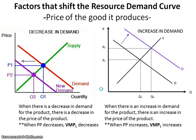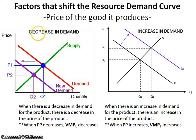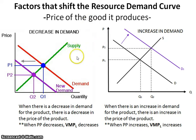When we talk about the demand for labor curve, we're talking about different factors that will shift this downward sloping demand curve. The number one reference given is the price of the good it produces, because the demand for a resource is derived from the demand for the product that it produces. It really should make sense intuitively how this falls into play.